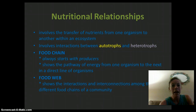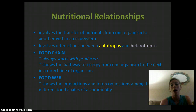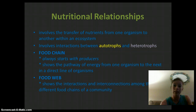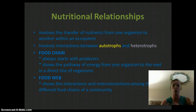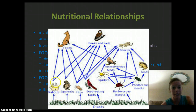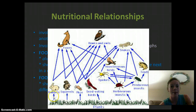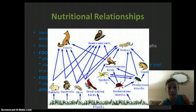Nutritional relationships involve a transfer of nutrients from one organism to the next within an ecosystem. They involve interactions between autotrophs — organisms that produce their own food — and heterotrophs, which are organisms that must consume another organism for food. The food chain is a linear chain that starts with producers, where one organism consumes another; it is the pathway of energy from one organism to the next. A food web is many food chains intertwined within a community. For example, a food chain would be: plant → rabbit eats the plant → fox eats the rabbit. But in a food web, there are many different interactions between organisms living in the same community.